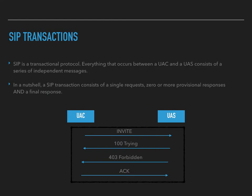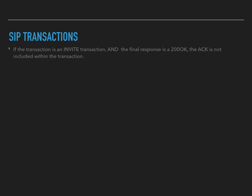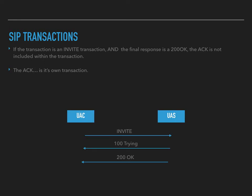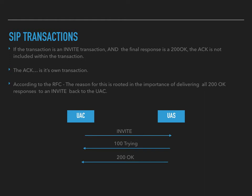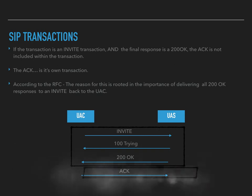But things get a little bit tricky here. If the transaction is an invite and the final response is a 200 OK, the ACK is not included within that one transaction — the ACK is its own transaction. Here's another example: the UAC sends that invite toward the UAS, 100 Trying is the provisional response, and then a 200 OK. That right there is one transaction. When that ACK is sent from the UAC back toward the UAS, that is its own transaction. According to the RFC, the reason for this is rooted in the importance of delivering all 200 OK responses to an invite all the way back to the UAC.